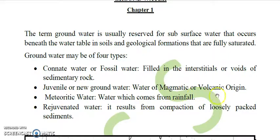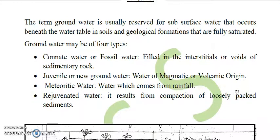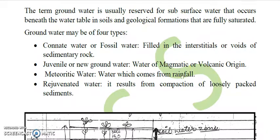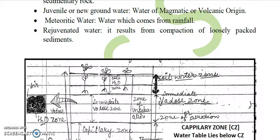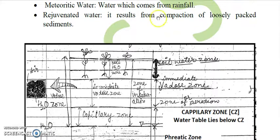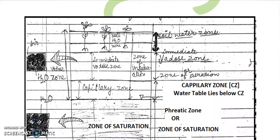Second is juvenile groundwater, also called new groundwater. This is the water of magmatic or volcanic origin — the water which comes out with magma or volcanic eruption. Next is meteoric water, which comes from rainfall. The next type is rejuvenated water, which results from compaction of loosely packed sediments.